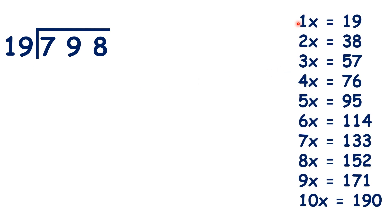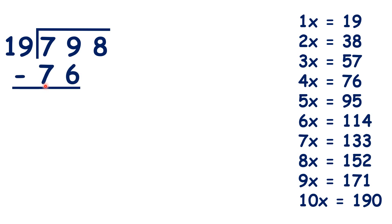We have 798 divided by 19, so we need our 19 times table, and we can start by dividing 79 by 19. We can see that 4 times 19 is 76, so we can write 76 below the 79 and write a 4 in our answer.